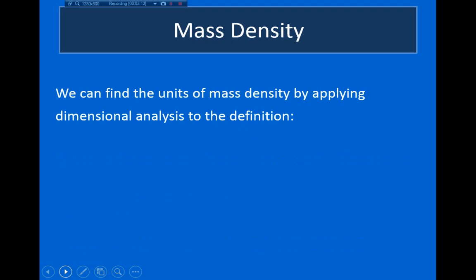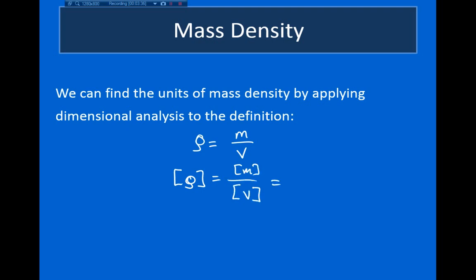Whenever I introduce a new quantity, I always want to look at its units. The equation for mass density is mass divided by volume. Dimensional analysis tells us the units on both sides of the equal sign must be equal. So the units of mass density equal the units of mass divided by the units of volume. Mass is in kilograms and volume is in cubic meters, so mass density has units of kilograms per cubic meter.